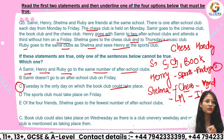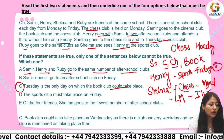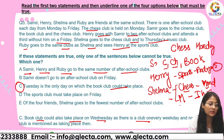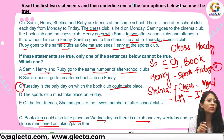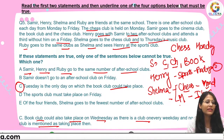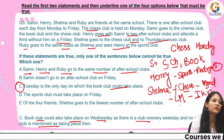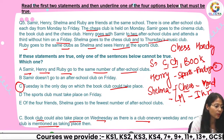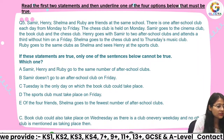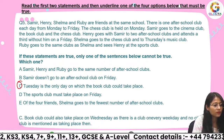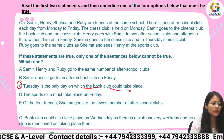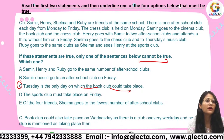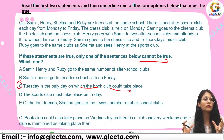The correct answer is C — Tuesday is the only day on which the book club could take place. The book club took place on Wednesday, as there is no other club mentioned on every weekday. The right answer is C. The question asks you to find the statement that cannot be true.